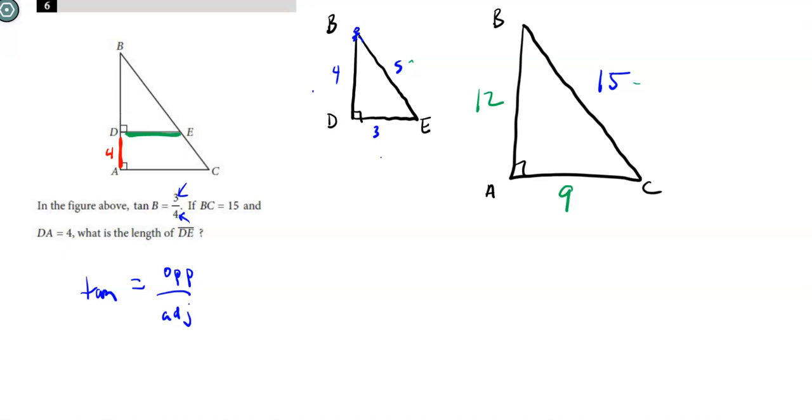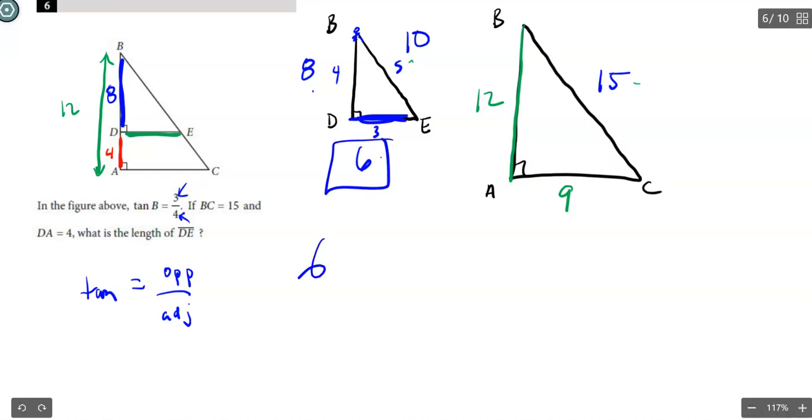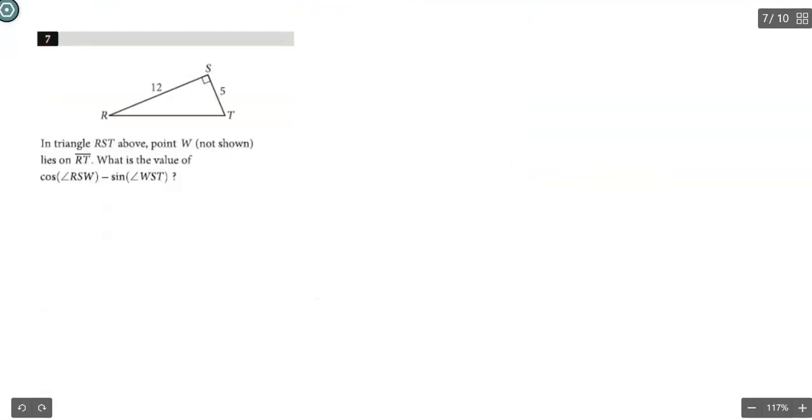So if this whole piece here is 12, and they told me that the red piece was 4, then that means that this piece actually here had to be 8. So it wasn't exactly a 3, 4, 5. It was double that. So it was actually 8, 6, and 10. So we now know the true length of DE. The true length is 6.